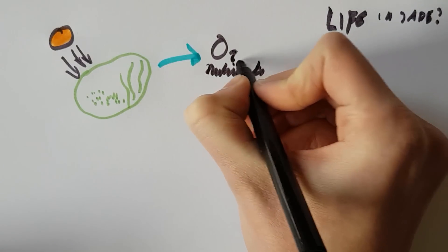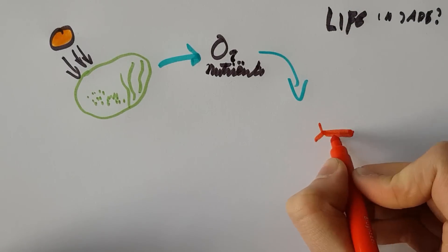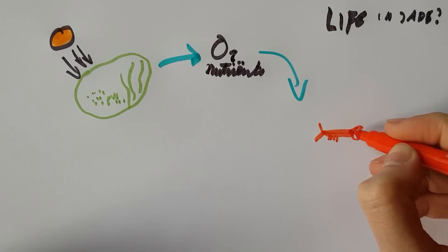Animals breathe the oxygen. Animals such as cherry shrimp. Yes, this is how I draw a cherry shrimp. Deal with it.